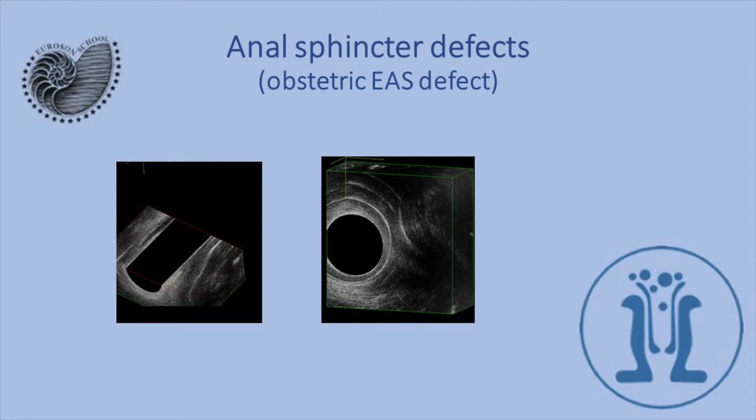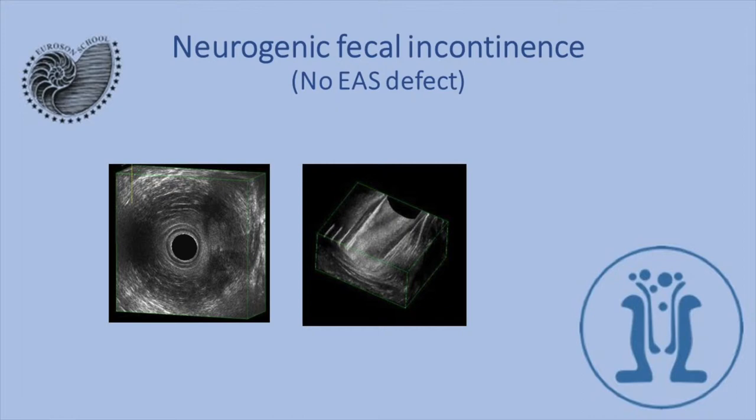Here we see an older woman with fecal incontinence. She has fecal incontinence but the external anal sphincter is intact. This is because of a neurogenic defect — there is no sphincter defect that could be attributed to delivery.